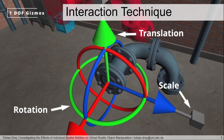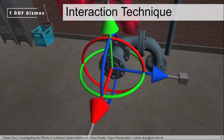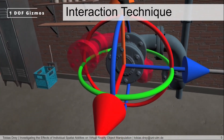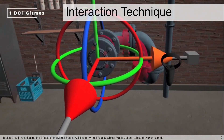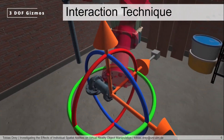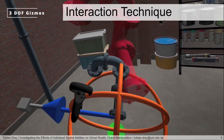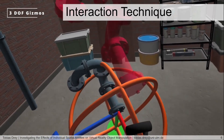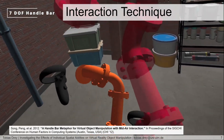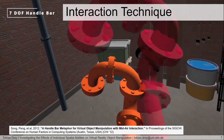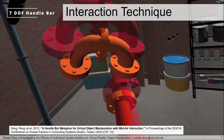We chose interaction techniques to investigate the whole one to nine degrees of freedom spectrum and selected the previously shown well-established Gizmos used in Unity or Blender for simultaneous one degree of freedom manipulations as the first interaction technique. You can see in this video how it works. For three degrees of freedom we also selected the Gizmos. For both, complex manipulations must be decomposed and performed sequentially when the task needs more manipulations than simultaneously possible with the respective Gizmos. We further chose the handlebar metaphor for simultaneous seven degrees of freedom object manipulation. It can handle all manipulations simultaneously and participants need no decomposition, even for the most complex task in our study.